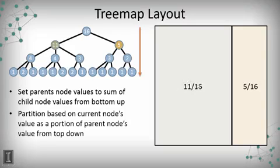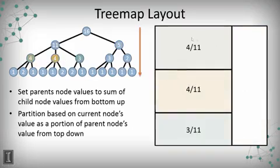Now we've got this portion here on the left representing 11. We need to subdivide that into portions representing 4, 4, and 3. So we subdivide them into a portion that's 4 elevenths along the way, another 4 elevenths along the way, and then finally another 3 elevenths along the way representing each of these three nodes.